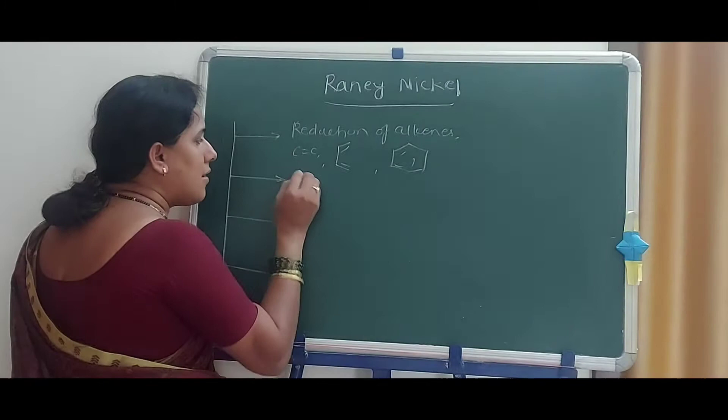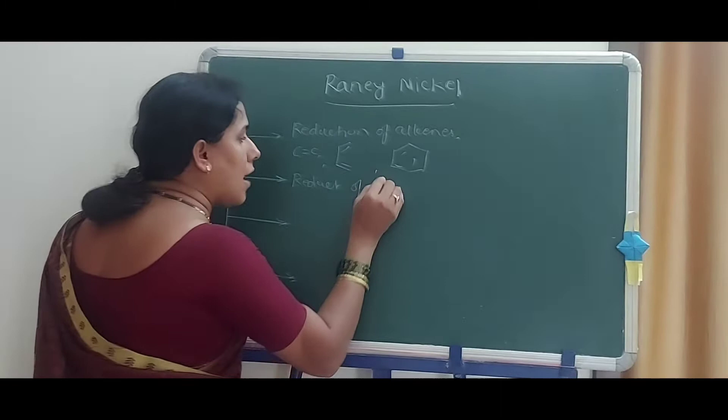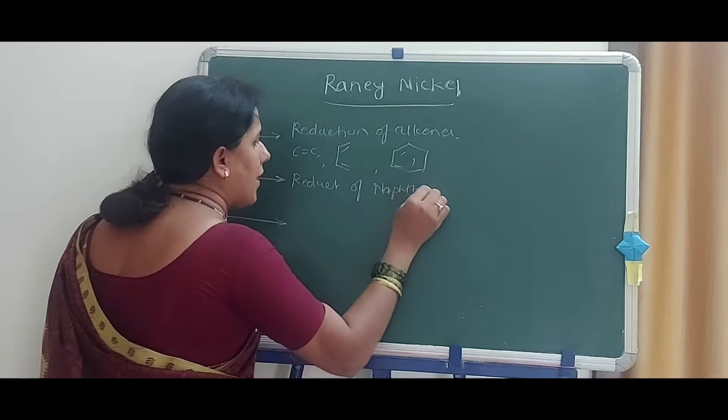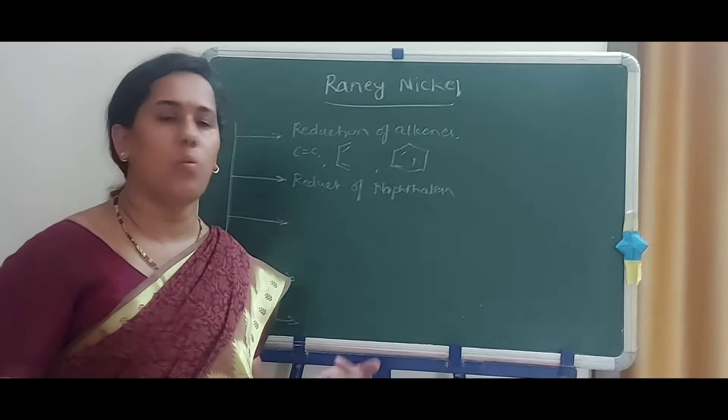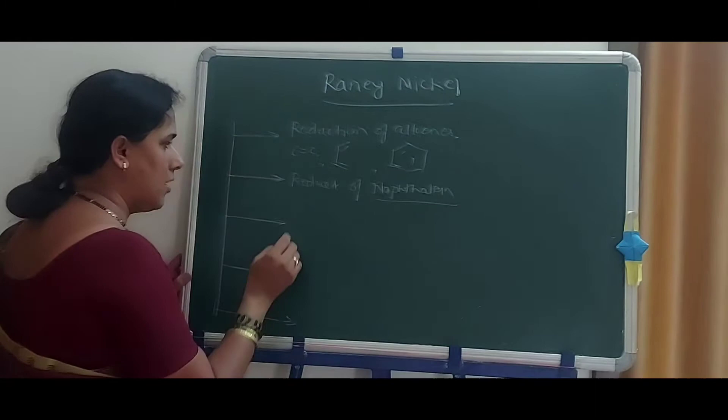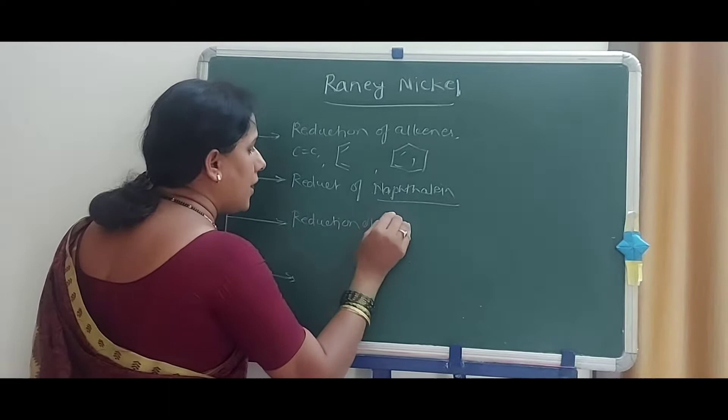The second point is reduction of naphthalene. When naphthalene is reduced in the temperature range of 100 to 150 degree Celsius using Raney Nickel, one product forms. At 150 to 200 degree Celsius another product forms. Next point is reduction of phenol — what happens during that process.